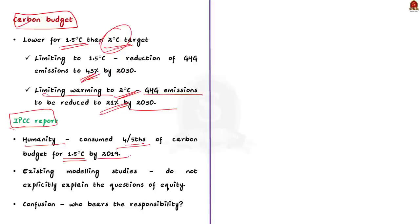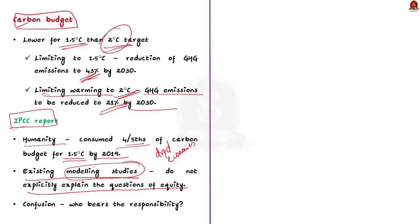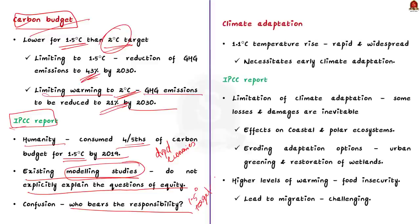The report also notes that existing modeling studies, often used to assess emission trajectories, do not explicitly account for questions of equity — they do not explicitly explain the carbon budget of developed versus developing economies. So there is confusion about who bears the responsibility for achieving the ambitious 1.5 degree Celsius target. From an impacts point of view, it is important to aspire for a 1.5 degree Celsius target to reduce climate risks.